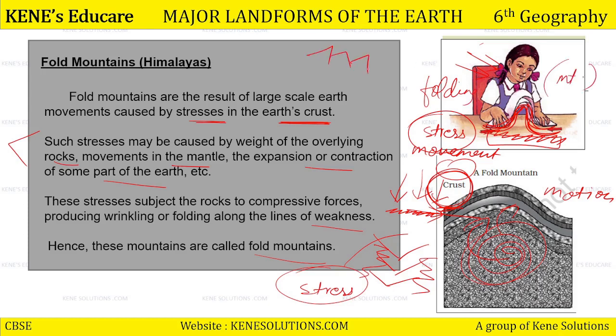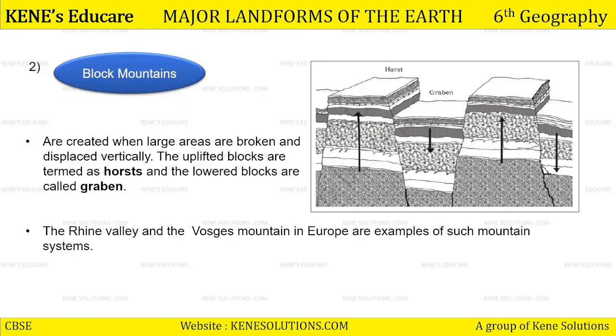Himalayas ki ranges ko dekh ke aap samajh sakte ho — that Shivalics are the range which are still folding, that means there is still some kind of stress on the earth crust. Humari India ki tectonic plate ke upar constantly pressure padhta rehta hai, movement hota rehta hai, us movement ki waje se mountain ka creation hota hai. Toh aise bante hain fold mountains. Toh yeh ho gaye first type of mountain — fold mountains. Examples mein Himalayas, jo ki kaafi young hain, aur Aravallis, jo ki folding ke feature se bani hui mountain ranges hain.